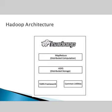HDFS is based on the Google File System and provides a distributed file system designed to run on commodity hardware. MapReduce is a parallel programming model for writing distributed applications, devised at Google for efficient processing of large amounts of data on large clusters of commodity hardware.